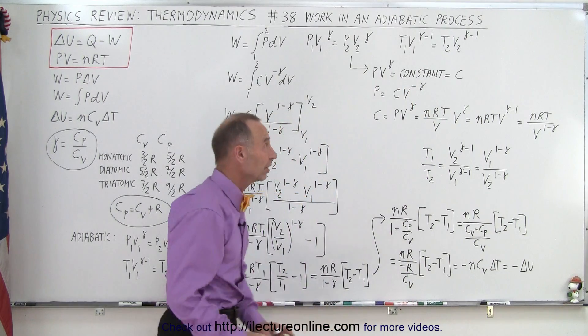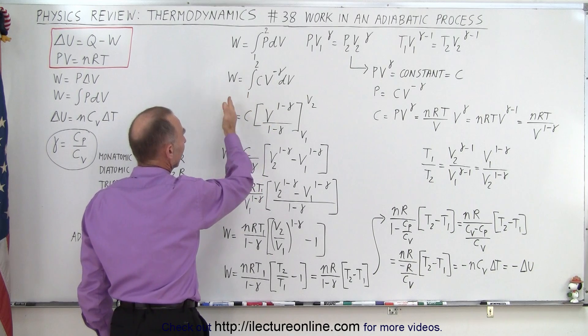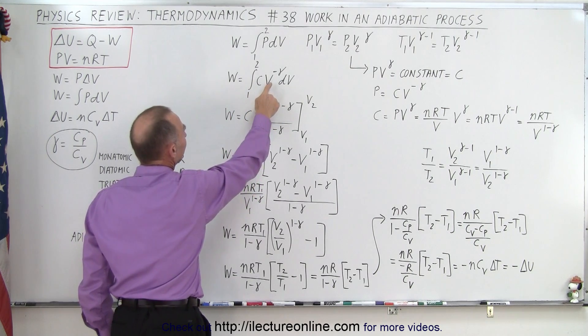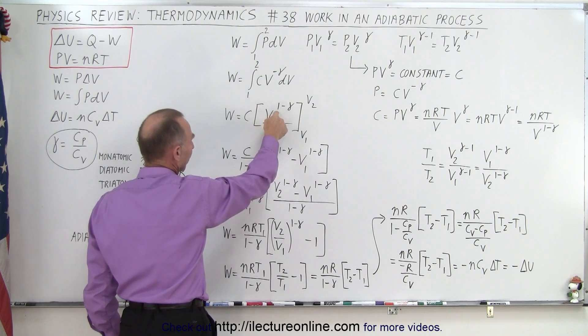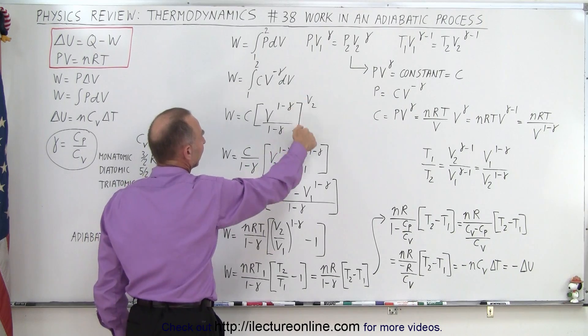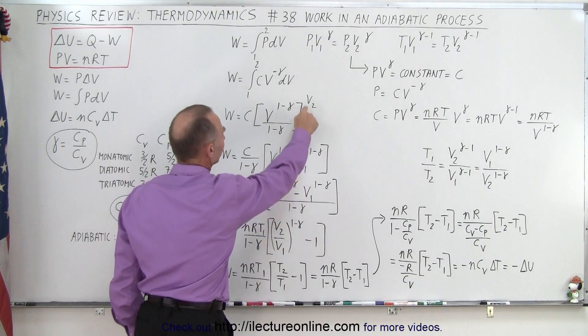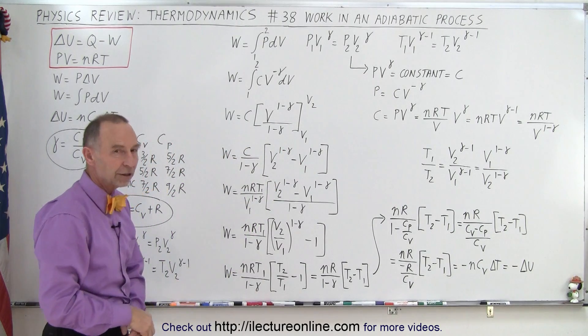At this point, we may not know what the constant is, but we can make the substitution and take the constant outside the integral, and then when we integrate V to the minus gamma dV, we get V to the minus gamma plus 1, that's simply put the 1 in front, divided by the new exponent, and then evaluate it from the initial volume to the final volume. The work done is equal to this in terms of the volume.